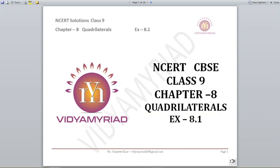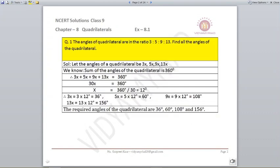Hello students, welcome to Vidya Mirat. Today I have come with Class 9 Chapter 8 Quadrilaterals, and we are going to do Exercise 8.1 of NCERT. Question number one: the angles of a quadrilateral are in the ratio 3:5:9:13. Find all the angles of the quadrilateral.